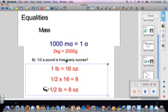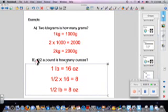Here are some examples. Two kilograms is how many grams? Well, I know that one kilogram, based on the previous page, is equal to one thousand grams. So if I need to know how much two kilograms is, I just multiply two times one thousand and I get two thousand. Two kilograms equals two thousand grams. That's not so hard.